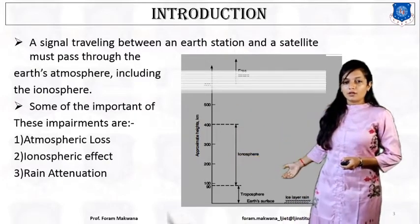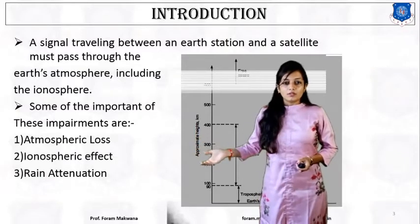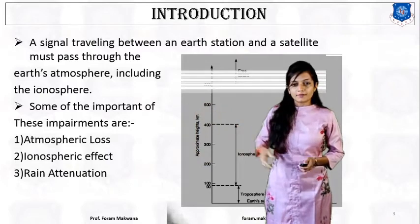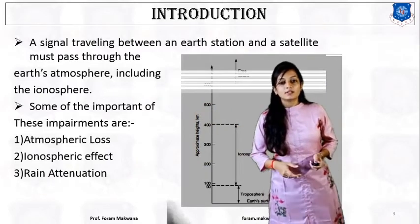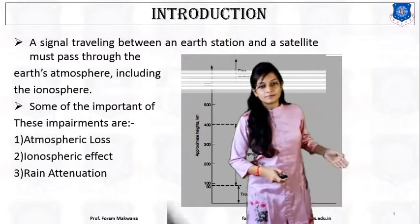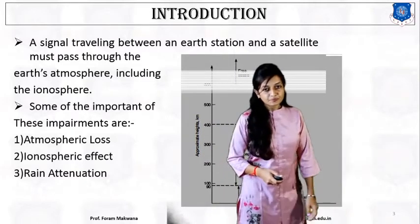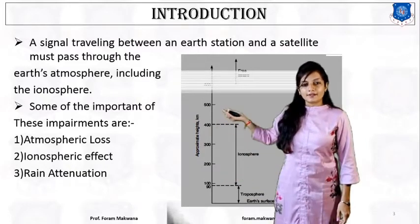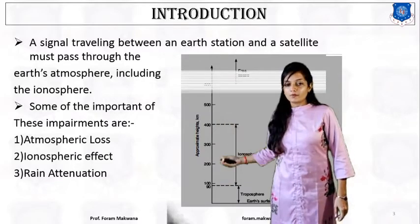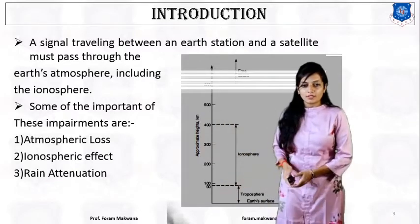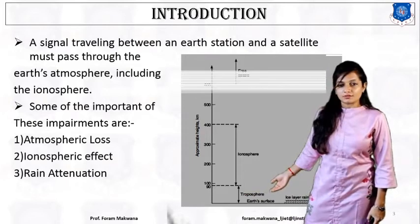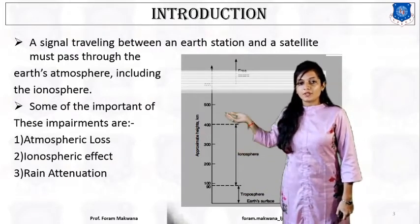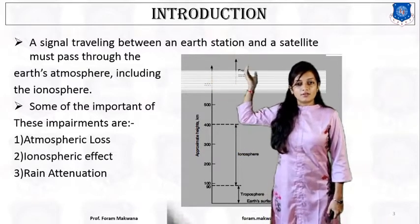This graph represents the height in kilometres versus the different layers. Based on the height, different layers are identified. From 0 to 90 kilometres it is the earth's troposphere, 90 to 400 kilometres it is the ionosphere, and more than 600 kilometres it is free space.